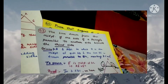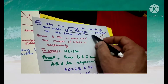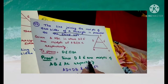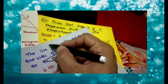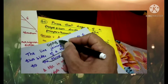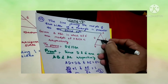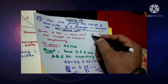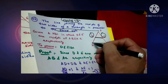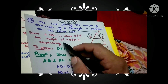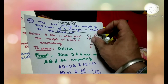Now we move to Theorem 44: the line joining the midpoints of two sides of a triangle is parallel to the third side. This is the converse of the previous theorem. Triangle ABC is given, with D and E as midpoints of AB and AC respectively.